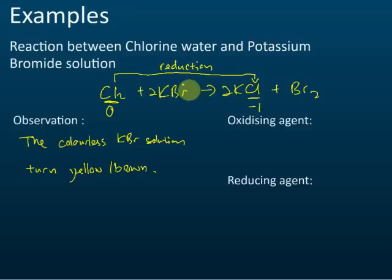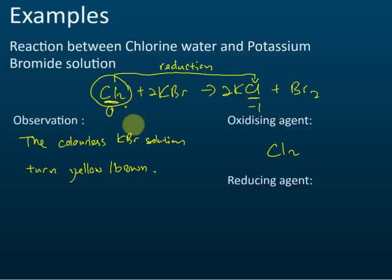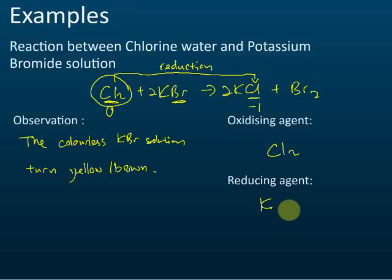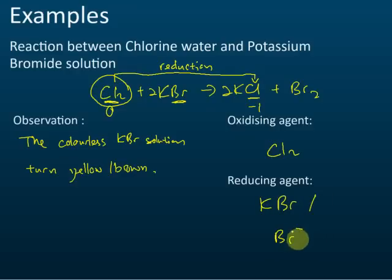Since chlorine undergoes reduction, it is the oxidizing agent. Halogens act as oxidizing agents. The halide — potassium bromide or the bromide ion — acts as the reducing agent.